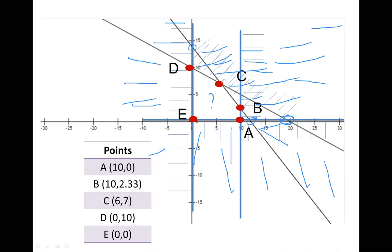We identify corner points A, B, C, D, and E and find their values. Some points are clearly visible on the graph: point E is (0, 0) and point A is (0, 10). Point D is (0, 10) — wait, point D is clearly at (0, 14) on the y-axis. Sometimes it is not easy to find points from the graph if it is not accurate. For example, point B is clearly at x1 equals 10, but x2 is approximately 2 point something.